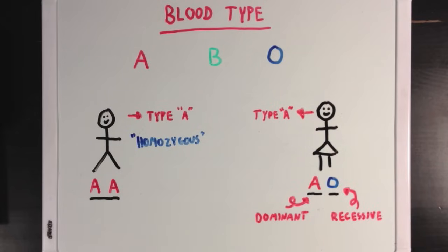When an allele is dominant, that means that if someone has two different alleles, it'll be the dominant one that wins. So in this case, since A is dominant over O, which is recessive, A will win, and she'll have blood type A.